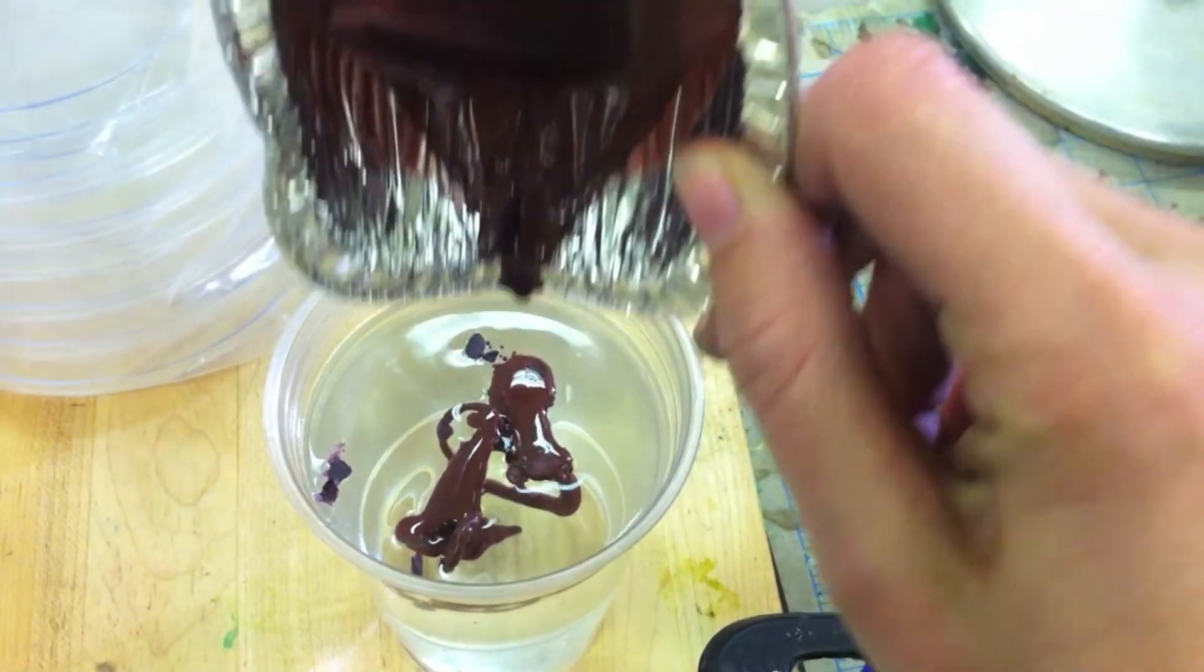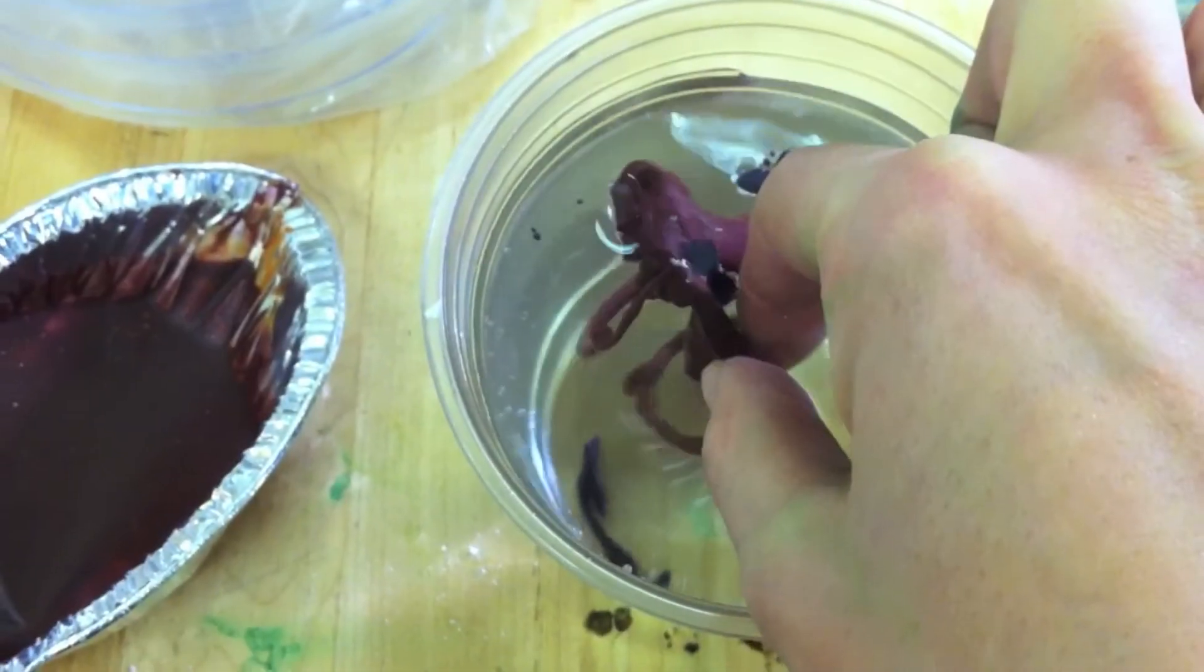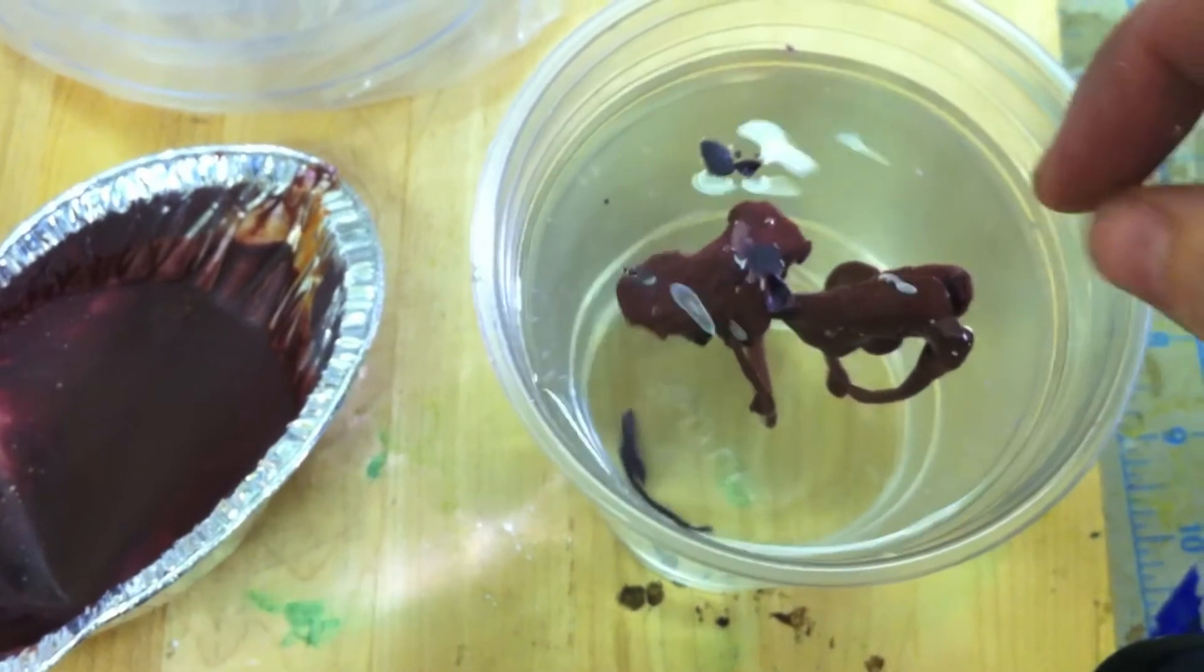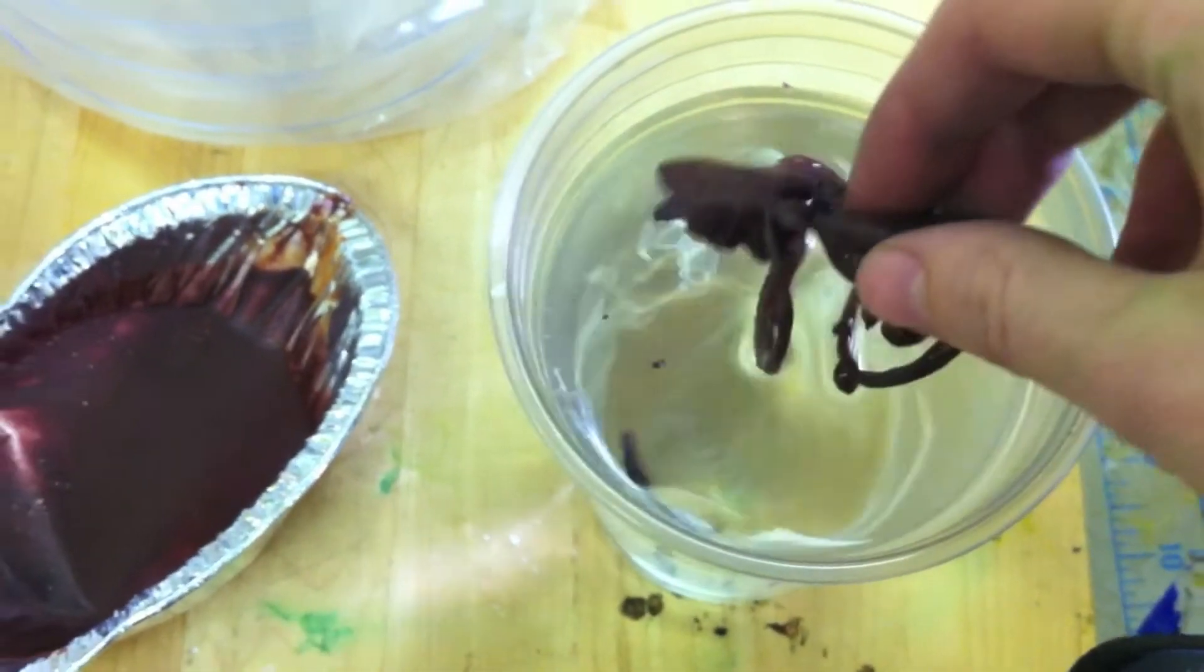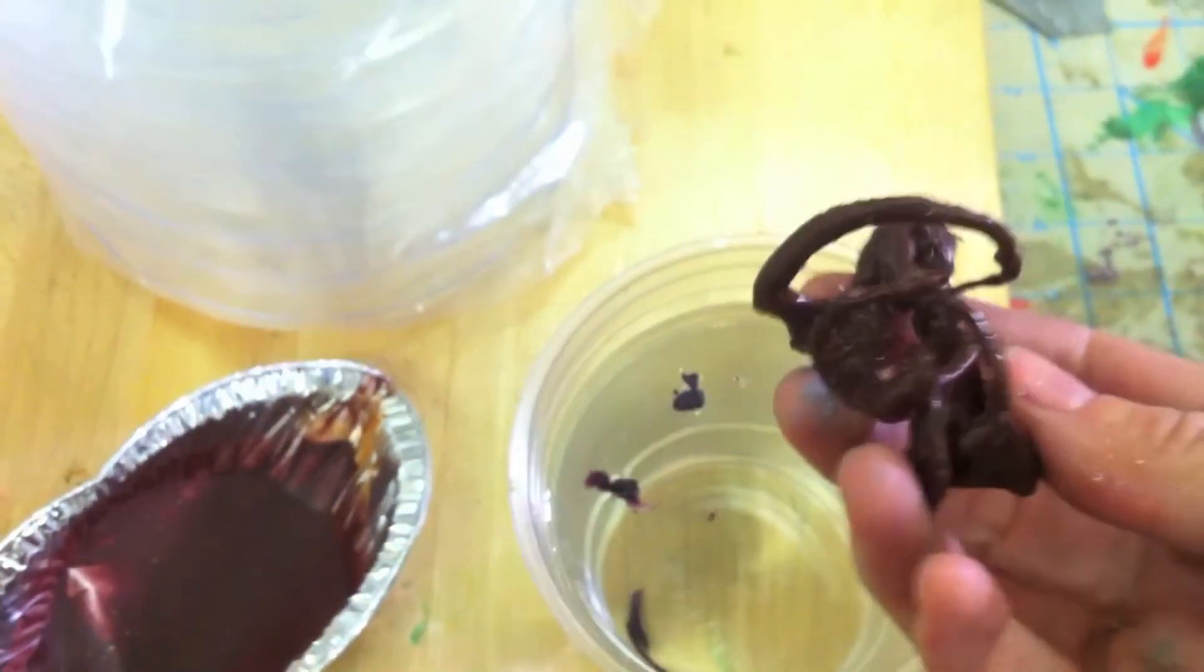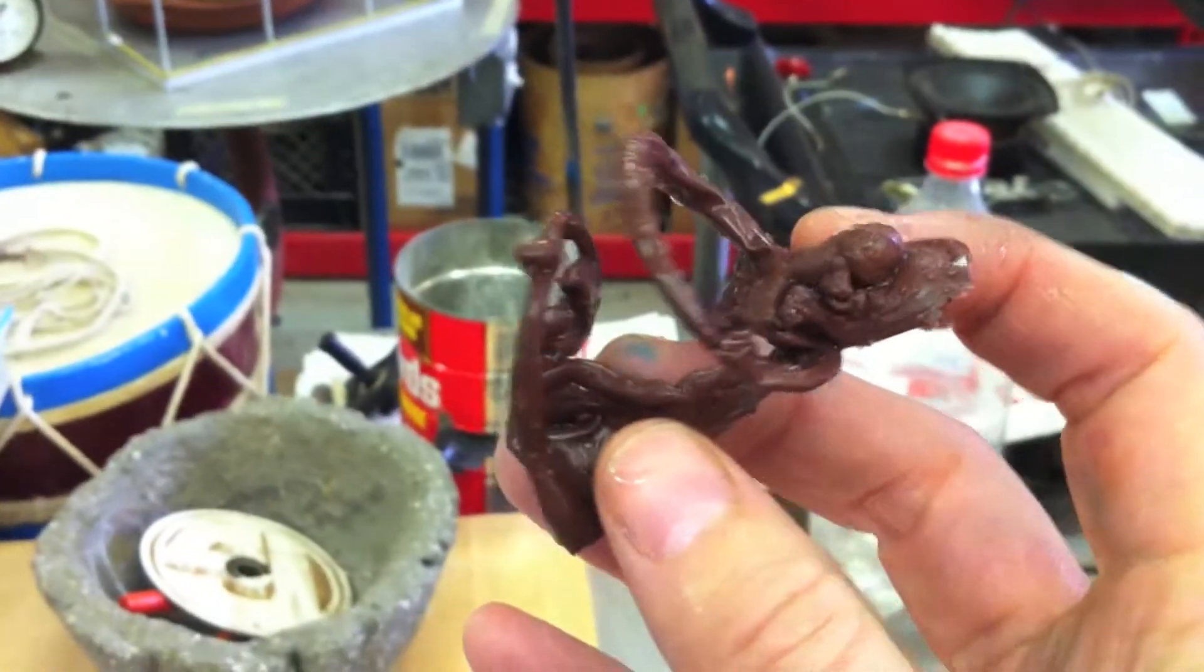Pour it in any way you want. Let it cool in the water for a minute or two. Lift it out. There you have it. You've made your very own lava booger.